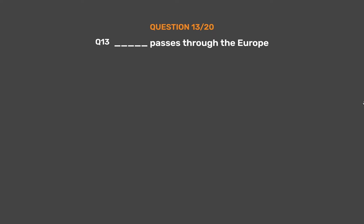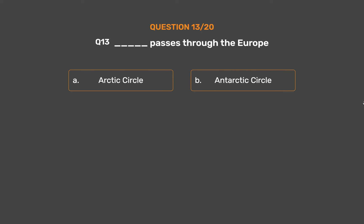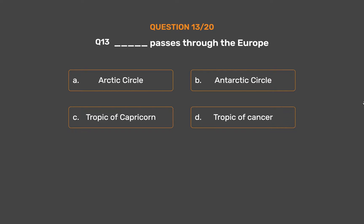Question Number 13. Which of the following passes through Europe? Option A: Arctic Circle. Option B: Antarctic Circle. Option C: Tropic of Capricorn. Option D: Tropic of Cancer.